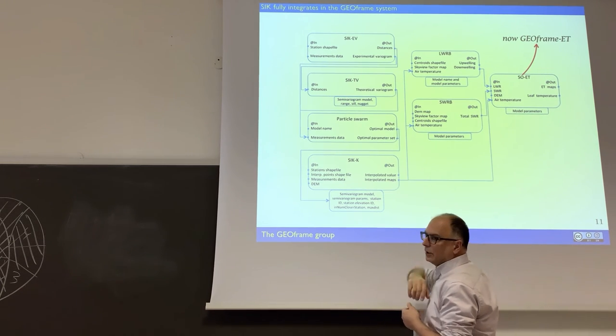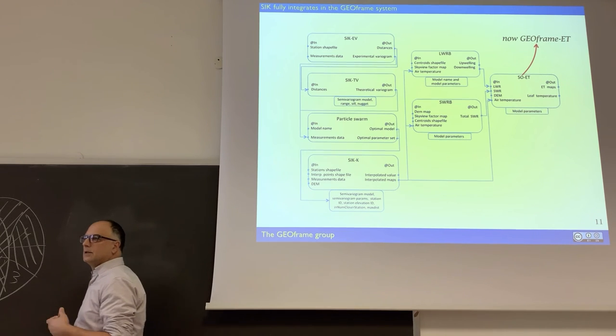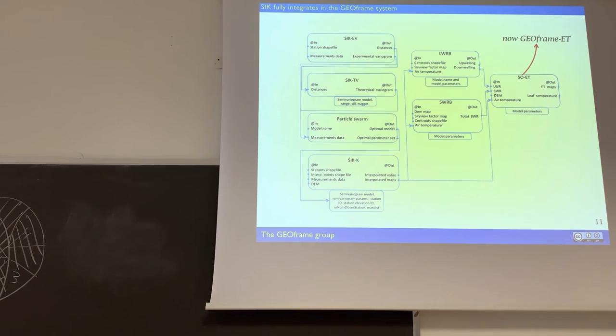And you calibrate each time the variogram here. And then, for instance, this is used in another process. For instance, in the process, in this case, you see two components here that you don't know what they mean. But one is long-wave radiation budget, and the other is short-wave radiation budget. I think that you have to match soon. It's just the estimation of radiation. For instance, for estimating the evapotranspiration. And in fact, in the end, the hand is the estimation of the evapotranspiration. Which used to be called Penman-Monteith evapotranspiration, but now we call it in a different way, which is called GEOframe ET.